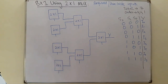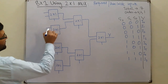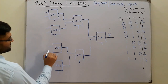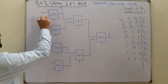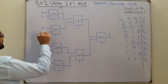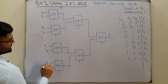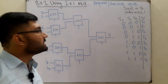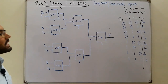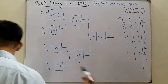To figure that out, we use the inspection method from the previous video. We write the inputs: each mux has 2 inputs. Starting from I0, I1, I2, I3, I4, I5, I6, and I7.